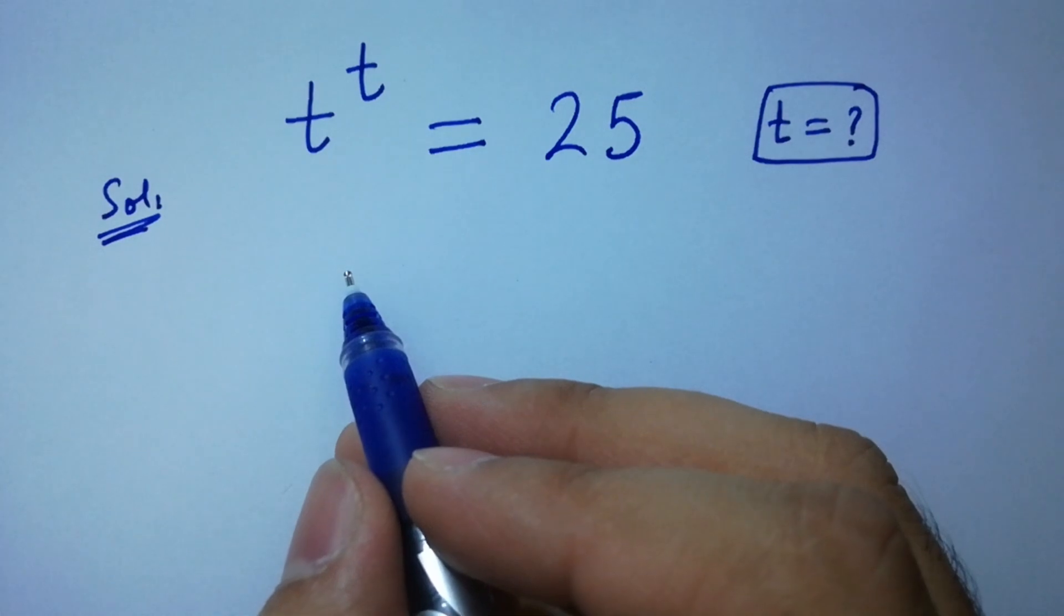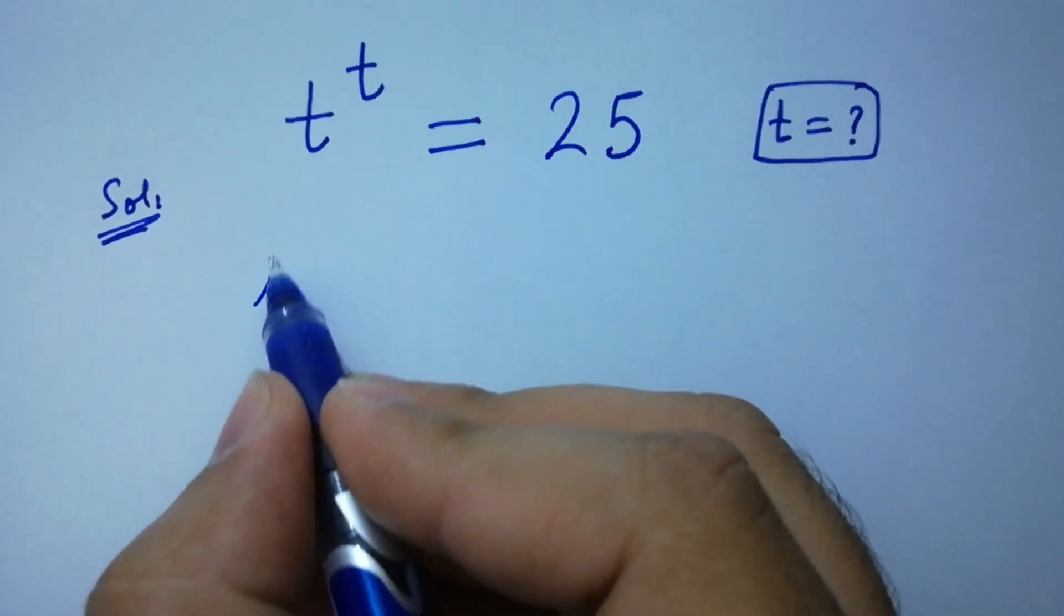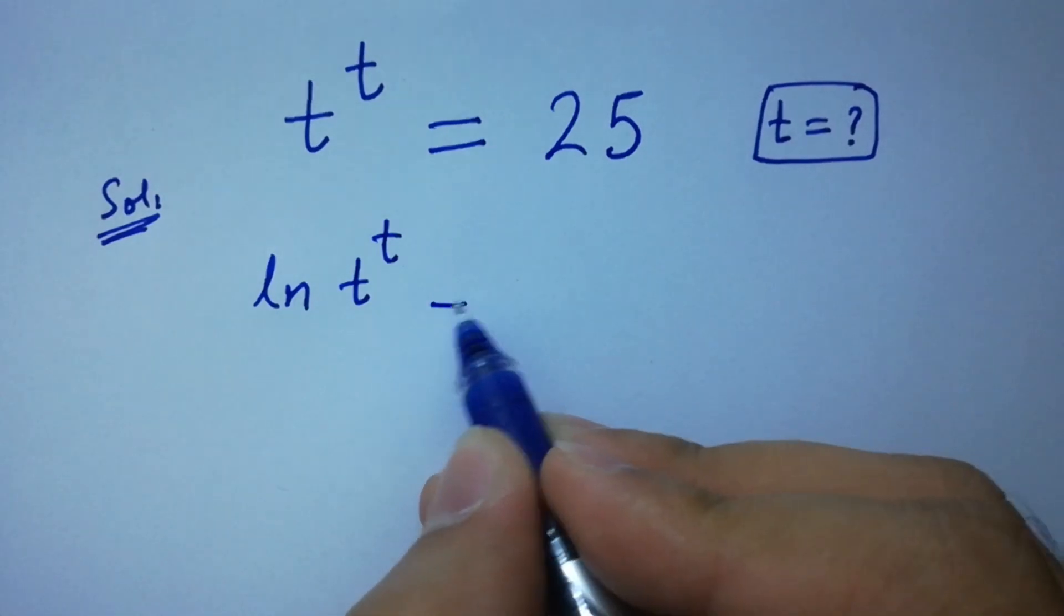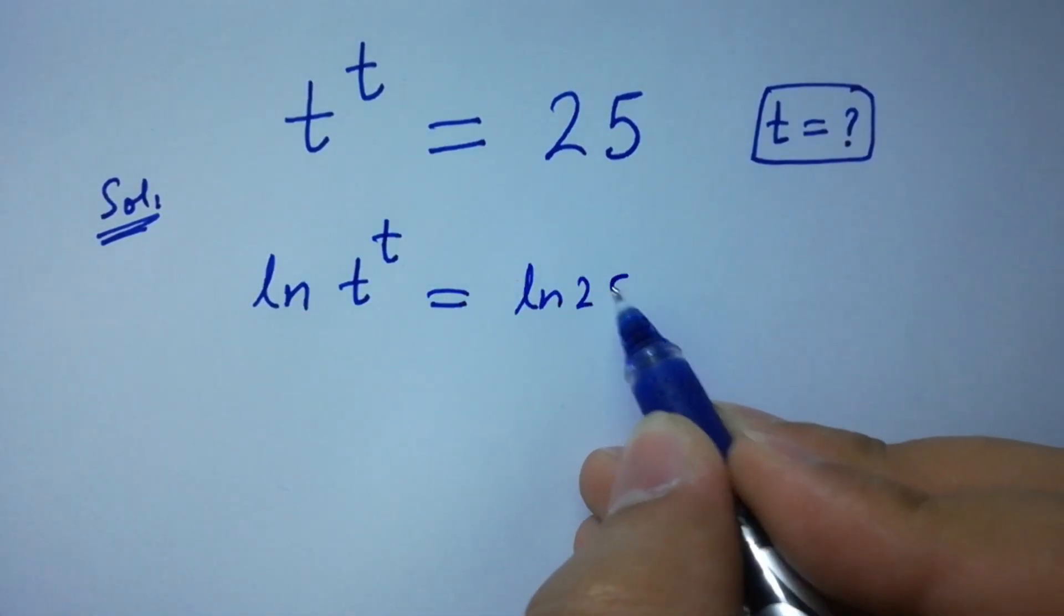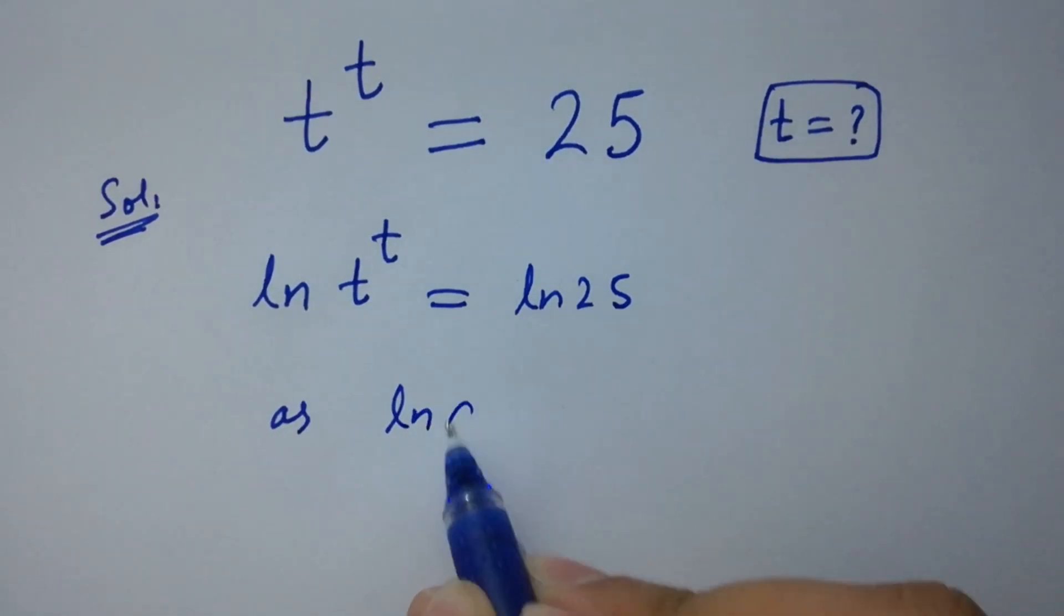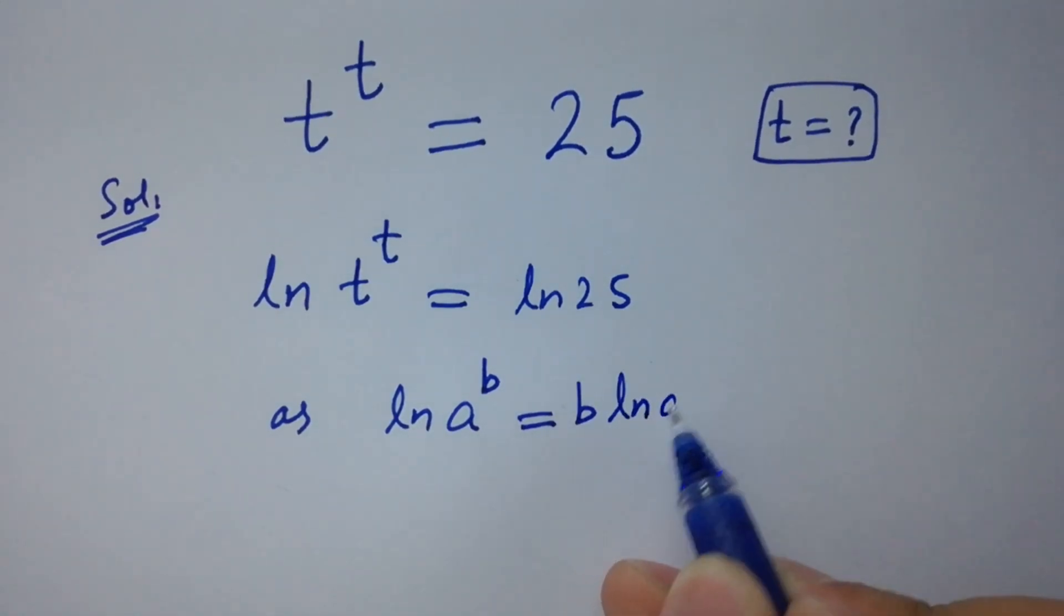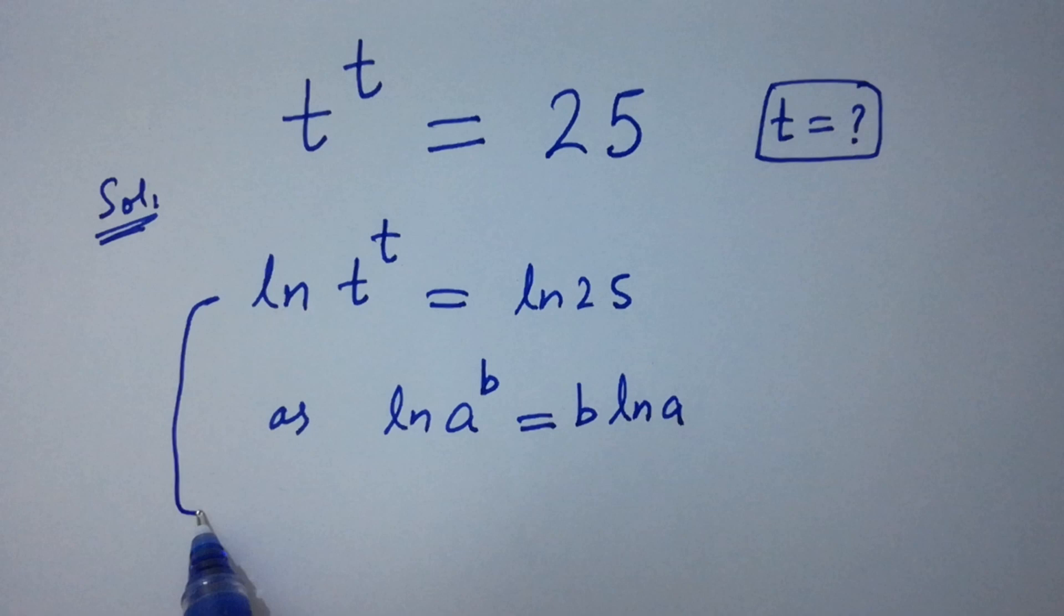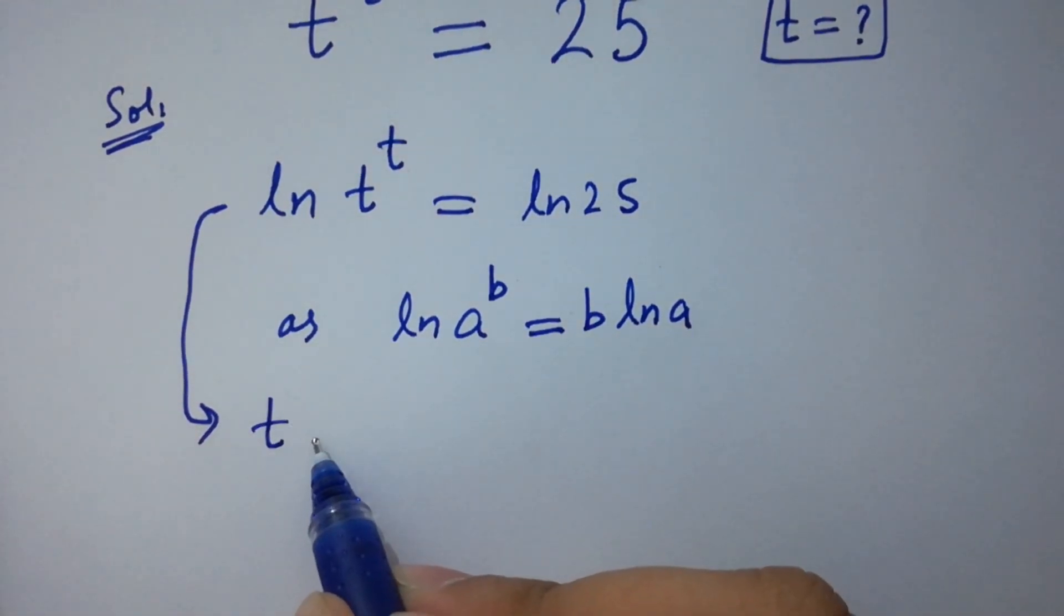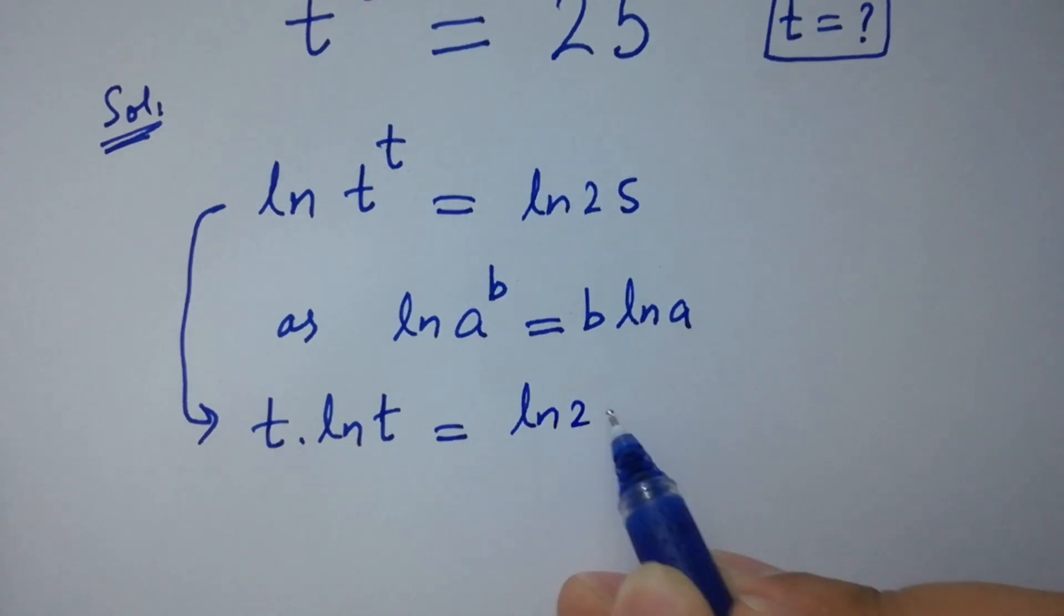To solve this, take natural log ln on both sides. As ln t to the power t equal to ln 25, as ln a to the power b equal to b ln a, then it will be t ln t equal to ln 25.